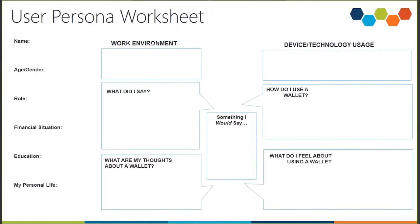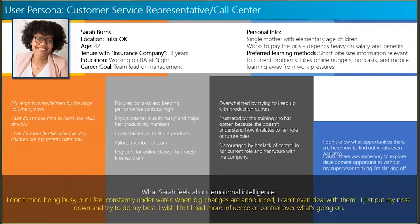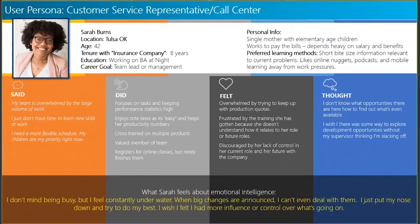Here's an example of a user persona worksheet that you can use to create a user persona. In this case we're estimating their age and gender, identifying their role, what their work environment is like, quotes that they said or may have said, their thoughts, something they would say, devices or technologies they use, and details about their personal life and education — creating a big picture of what this user represents. Here's an example of a user persona in practice: this was for a customer service representative in a call center named Sarah Burns. Sarah does not exist — she is an amalgamation of a number of interviews across the customer service representative call center role that helps create a picture of what that general role looks like.